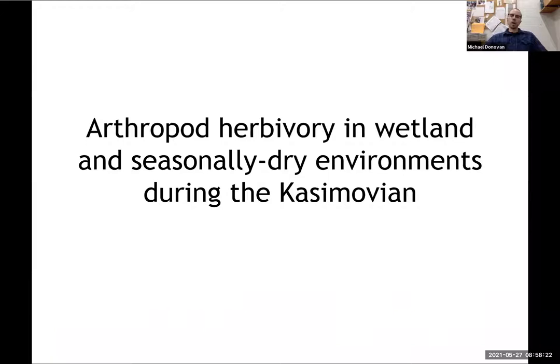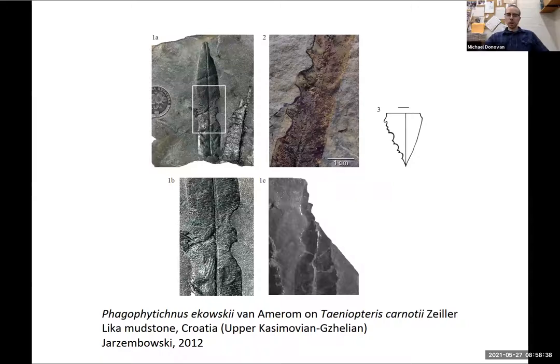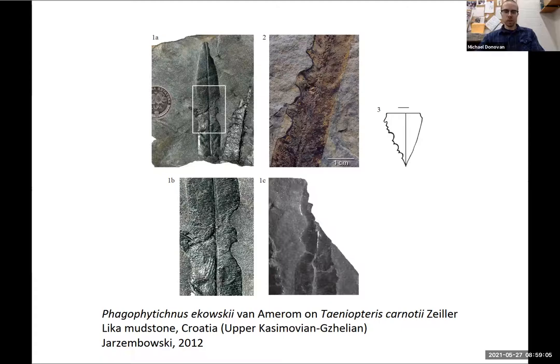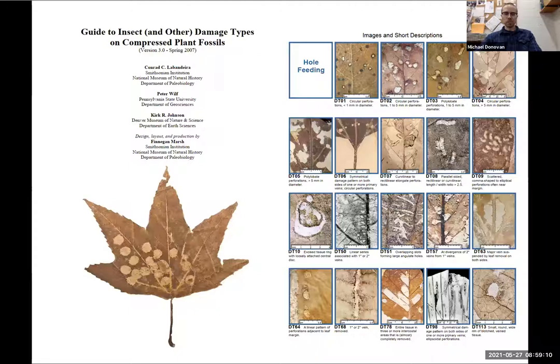For the rest of the talk, I'm going to focus on the interactions of arthropods with plants, both in wetland environments and seasonally dry environments during the Casimovian. There are lots of different ways to study insect herbivory in the fossil record. One way is to describe individual feeding traces — for example, Palaeophytophagites, a really common feeding trace, which is feeding along the margin of a leaf, a little U-shaped feeding trace. These are pretty common in the Pennsylvanian and really throughout the history of arthropod interactions.